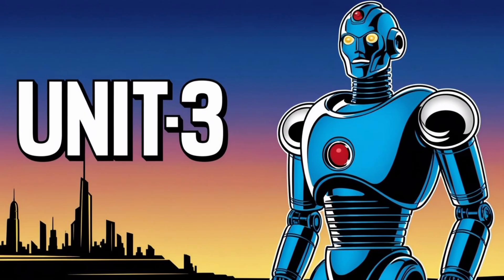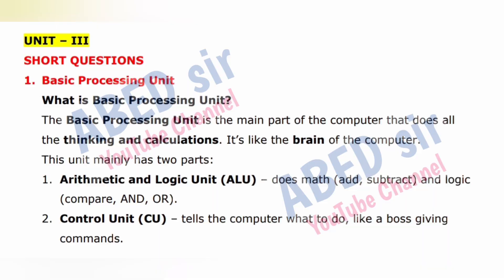Unit 3. The important short question is: What is Basic Processing Unit? The Basic Processing Unit is the main part of the computer that does all the thinking and calculations. It's like the brain of the computer. This unit mainly has two parts: 1. Arithmetic and Logic Unit (ALU), which does math — add, subtract — and logic — compare, AND, OR.